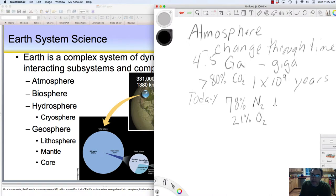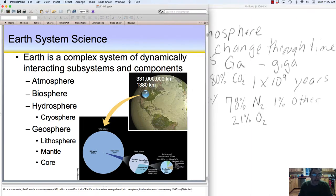That means 1% is other, and that includes carbon dioxide, methane gas, argon gas. So that's our atmosphere today, and obviously changes in that will affect the biosphere.